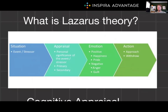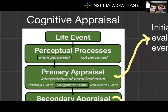What is Lazarus' theory? Well, Lazarus' theory posits that our emotions are determined by our cognitive appraisal of a situation. In other words, it's our interpretation of an event that leads to an emotional response. According to this theory, the way we think about and evaluate a situation influences how we feel about it.